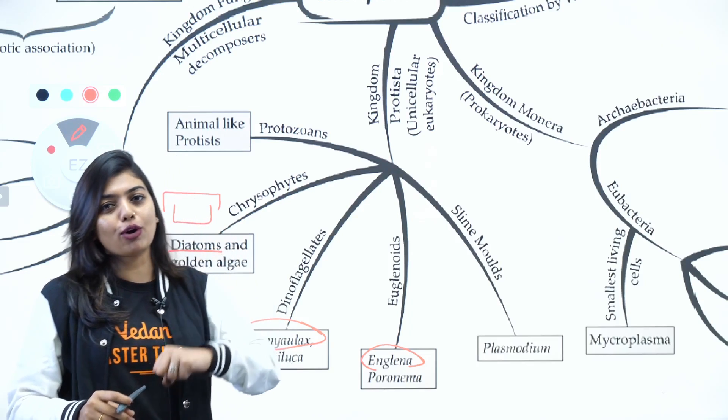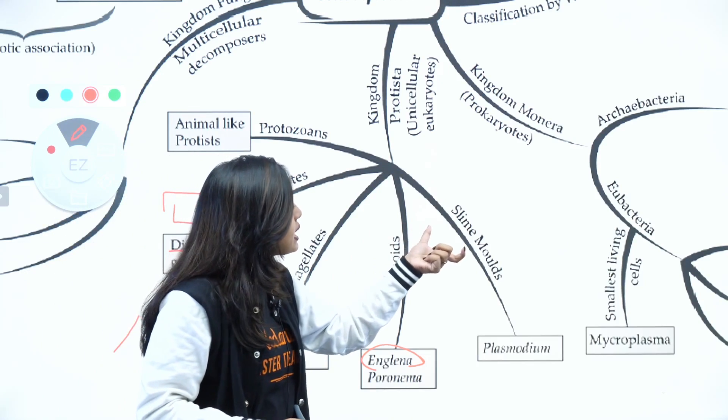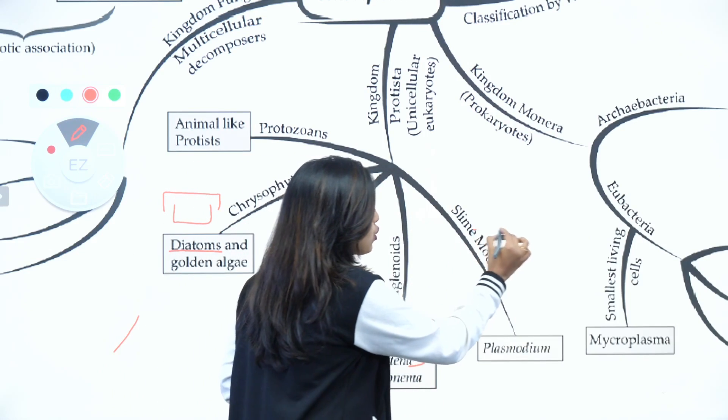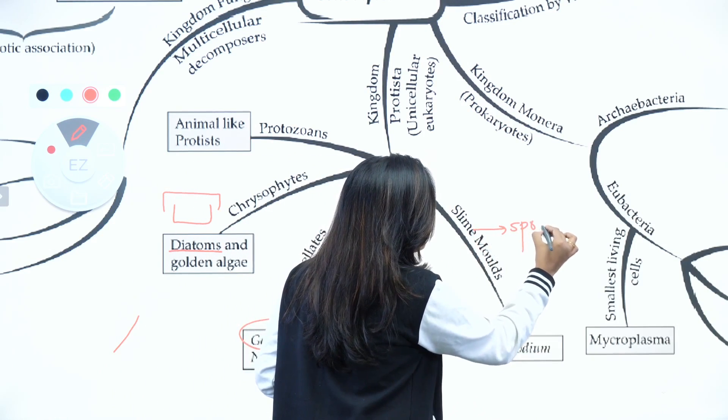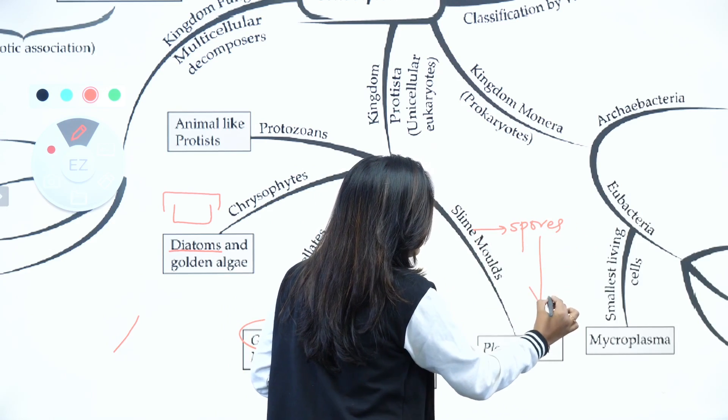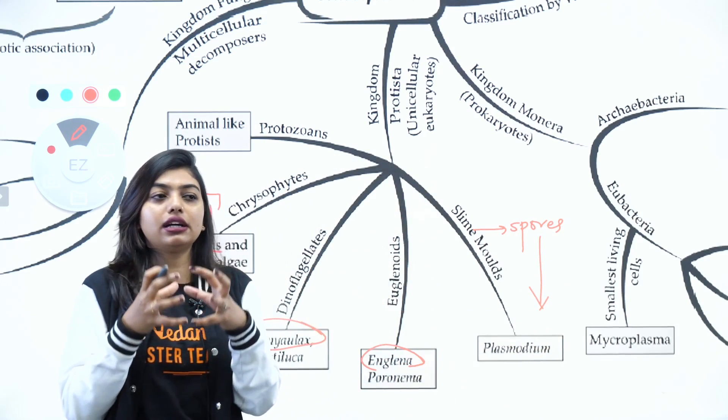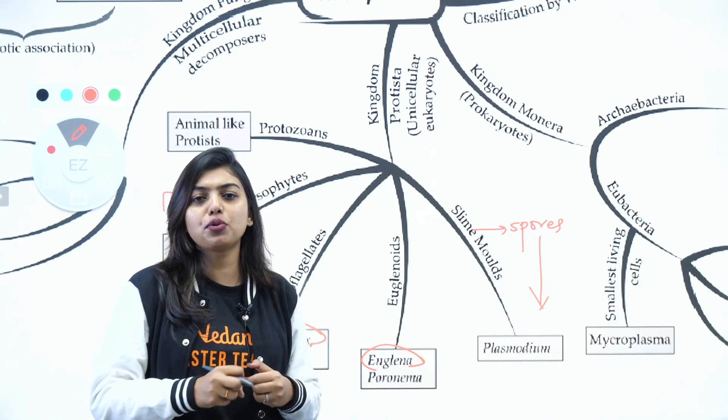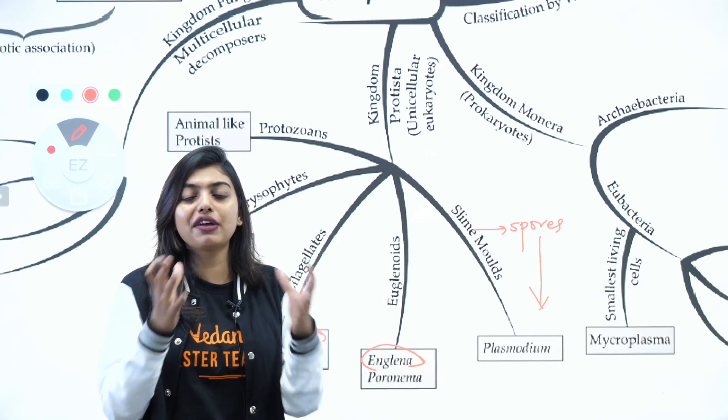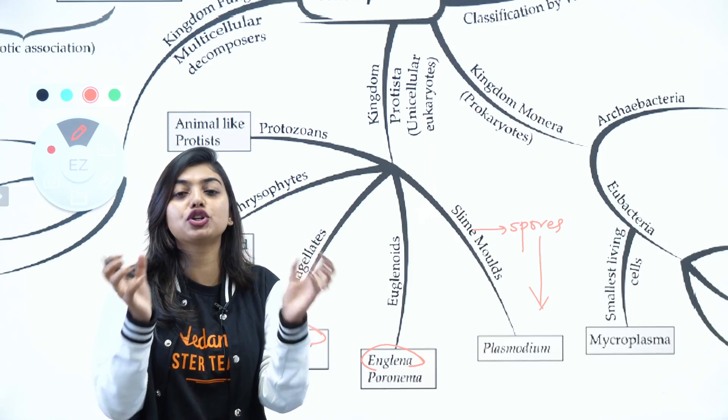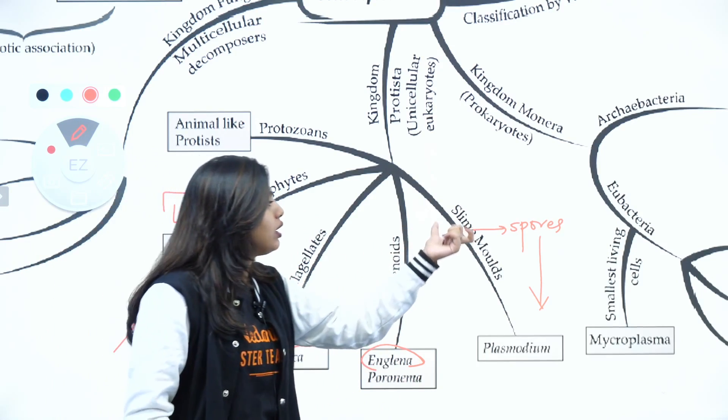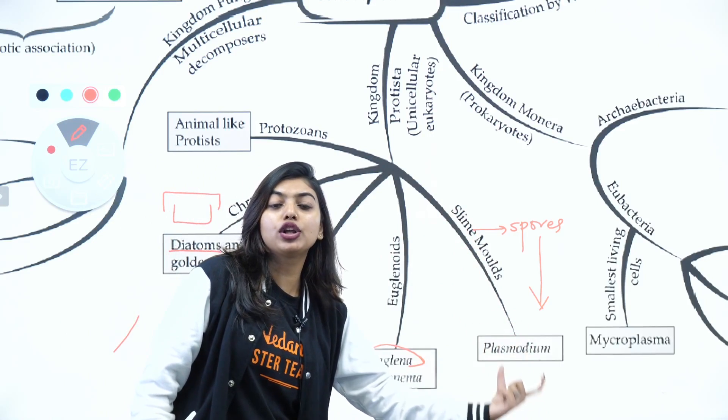The next one is slime mold, that is very fungi-like because they form spores. This aggregation of spores is called plasmodium. When the condition becomes favorable, they form aggregates which are called plasmodium, and when the condition gets unfavorable, these fruiting bodies will rupture and release spores and continue the replication. So here you have slime molds and plasmodium is the most important word to remember.